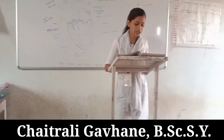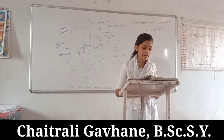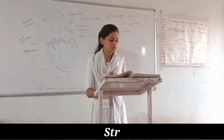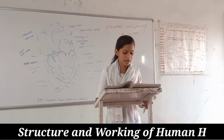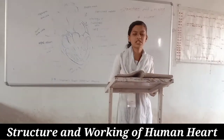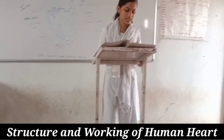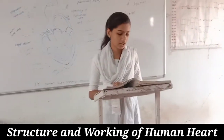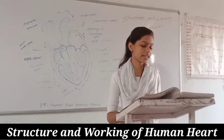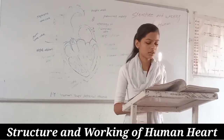The heart is mesodermal in origin, meaning it is made up of the mesodermal layer. It measures about 12 cm in length and 9 cm in breadth, and its weight is about 250 to 300 grams.